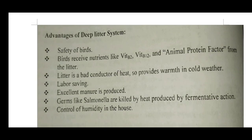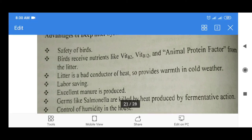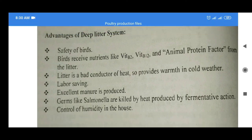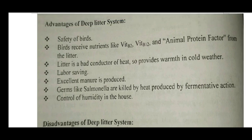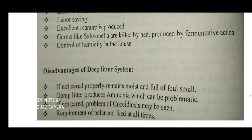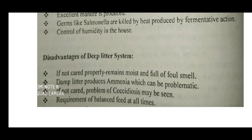Advantages of the deep litter system: birds receive nutrients like vitamin B2, vitamin B12, and animal protein factors from the litter. The litter is a bad conductor of heat, so it provides warmth in cold weather. It saves labor. Excellent manure is produced. Germs like Salmonella are killed by heat produced by fermentative action. It also aids control of humidity in the house.